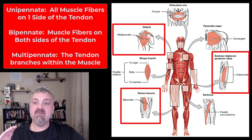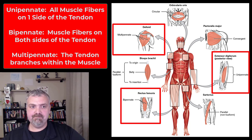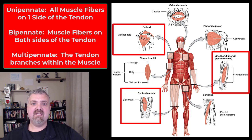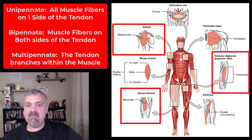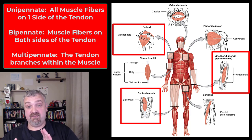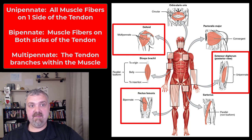Pennate muscles can be further broken down into unipennate, bipennate, and multipennate. Unipennate would be the extensor digitorum — all the muscle fibers are on one side of the tendon. Bipennate muscles, like the rectus femoris, have muscle fibers on both sides of the tendon. Multipennate muscles, like the deltoid, have tendons that actually branch within the muscle — there are large internal tendons inside the deltoid that you cannot see. The key advantage of pennate muscles is the amount of force and tension they can generate.